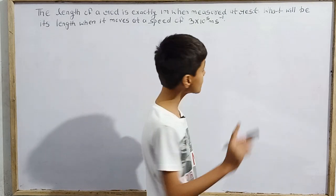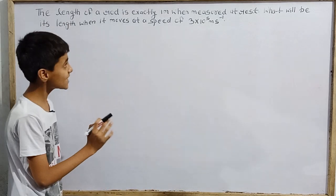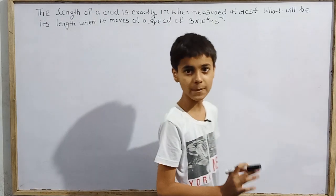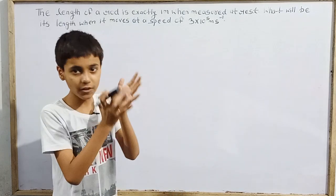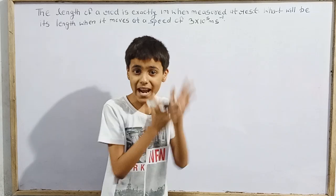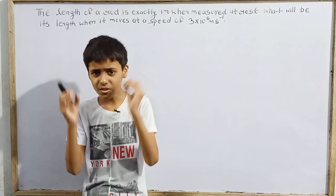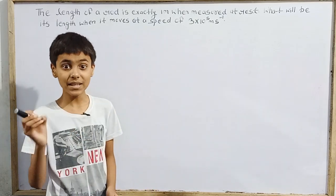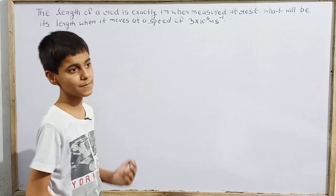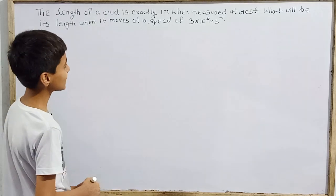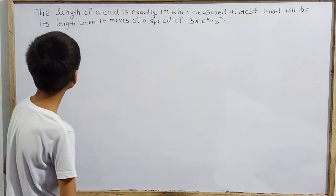The problem states: the length of a rod is exactly one meter when measured at rest. What will be its length when it moves at a speed of 3×10⁵ meters per second? We know that the length of any object changes when it moves at some fraction of the speed of light. Here, at 3×10⁵ m/s, the length will decrease noticeably compared to everyday speeds.